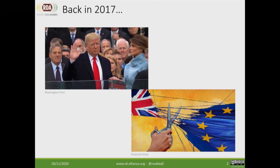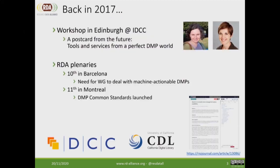Let's go back in time to 2017. To put things in the right mindset: in 2017, Donald Trump was sworn in as President of the United States and Great Britain triggered Article 50. But apart from those developments, we also had some good developments — and this is when the story of MA-DMP started.